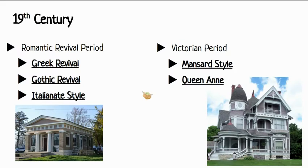So in the 19th century, we had two major periods that came through when it comes to the influences of our homes. We had the Romantic Revival period, which included the Greek Revival, Gothic Revival, and then the Italian style. The Greek Revival and the Gothic Revival brought back some of the looks that we've already seen before, so we'll get into more details about that.